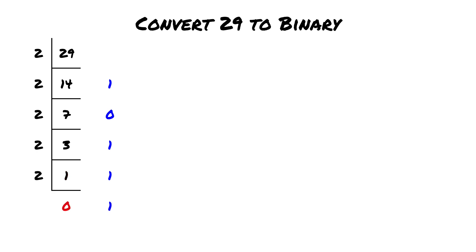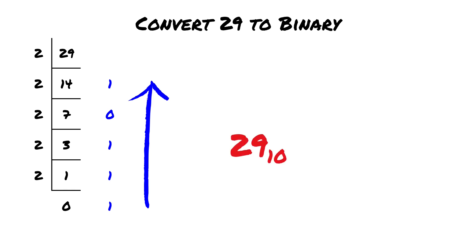3 divided by 2 is 1 remainder 1, and 1 divided by 2 is 0 remainder 1. Again reading the remainder values from bottom to top, the binary representation of 29 is 11101.